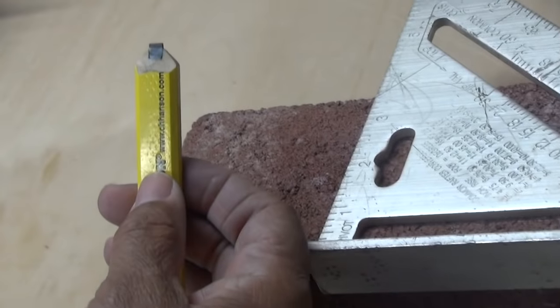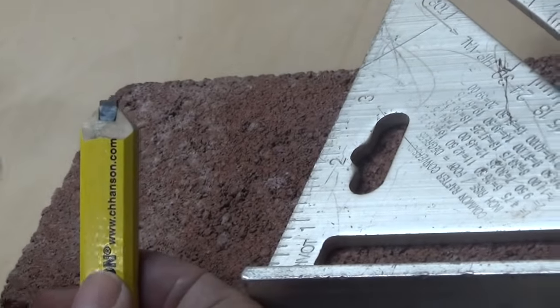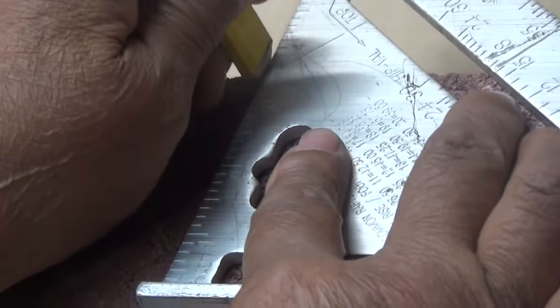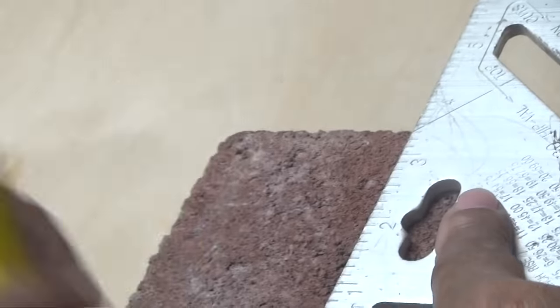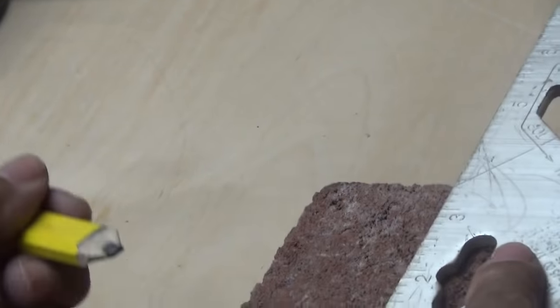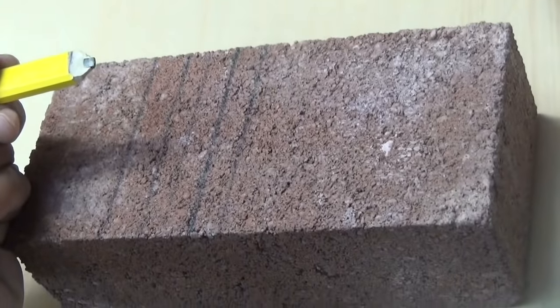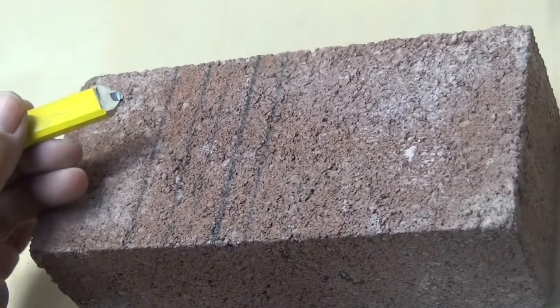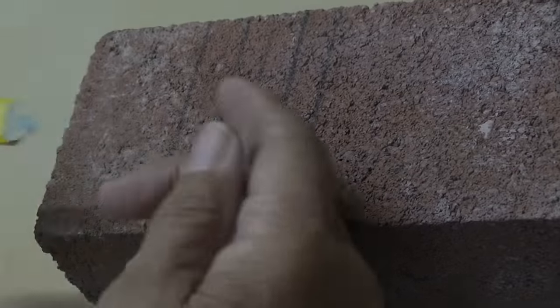Now, a carpenter's pencil, on the other hand, it's meant just for material like this. I can mark all day long. Ready? Look, still got it. Mark it again, still got it. Mark it again, I still have a lead there. I'm just marking a brick here, and I can mark all day long on a brick, and it's not going to chew the lead away like on that number two.